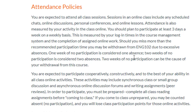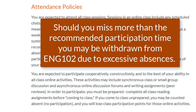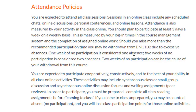You need to tell students that if they miss the allotted time you've given them — in my class it's two weeks — they can miss up to two weeks without penalty. Should you miss more than the recommended participation time, you may be withdrawn from English 102 due to excessive absences. One week of no participation is considered one absence, and two weeks of no participation is considered two absences, which can be the cause of withdrawal from the course.